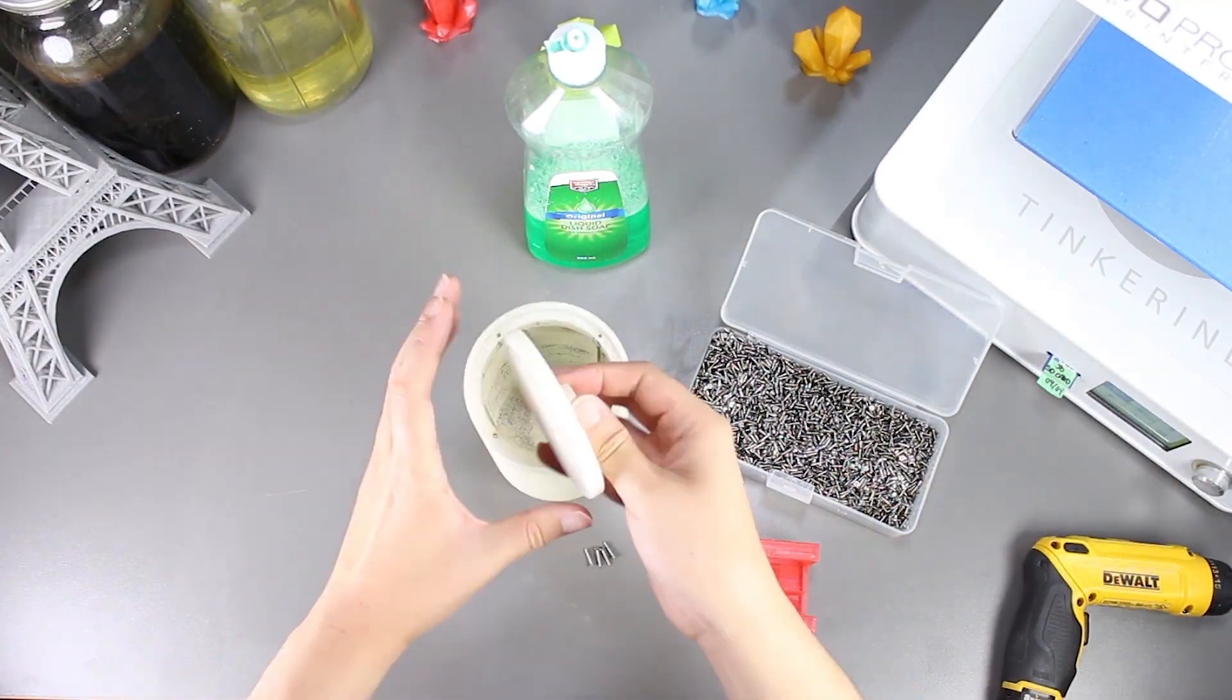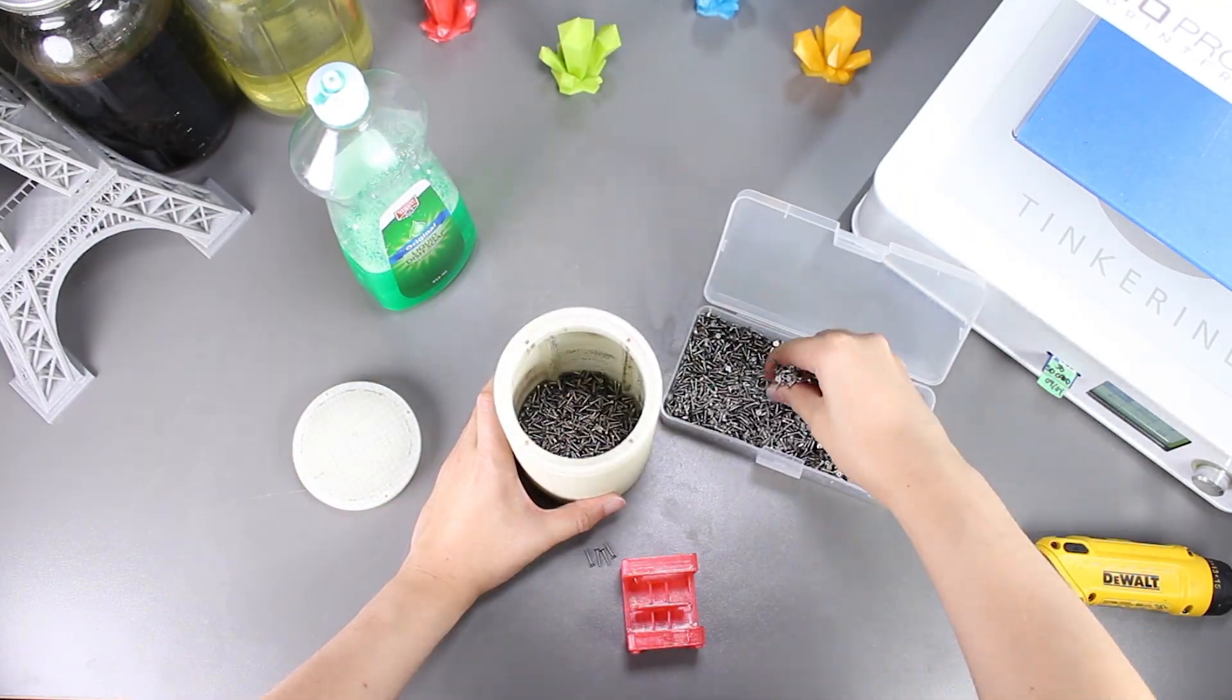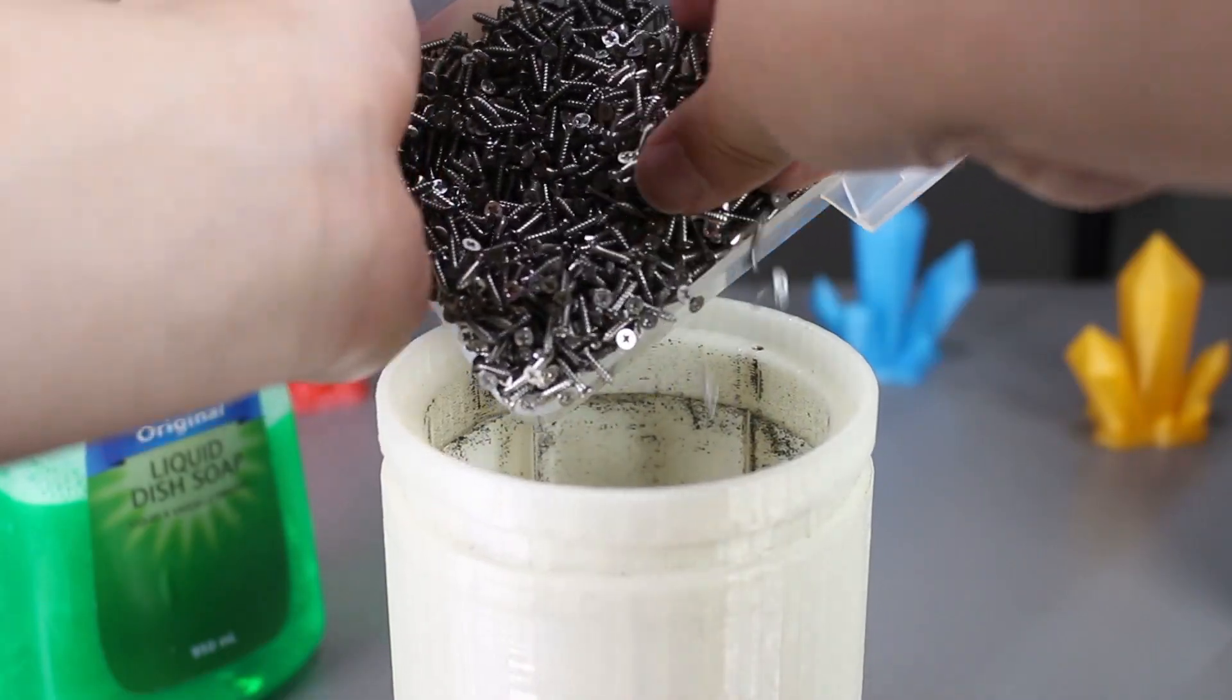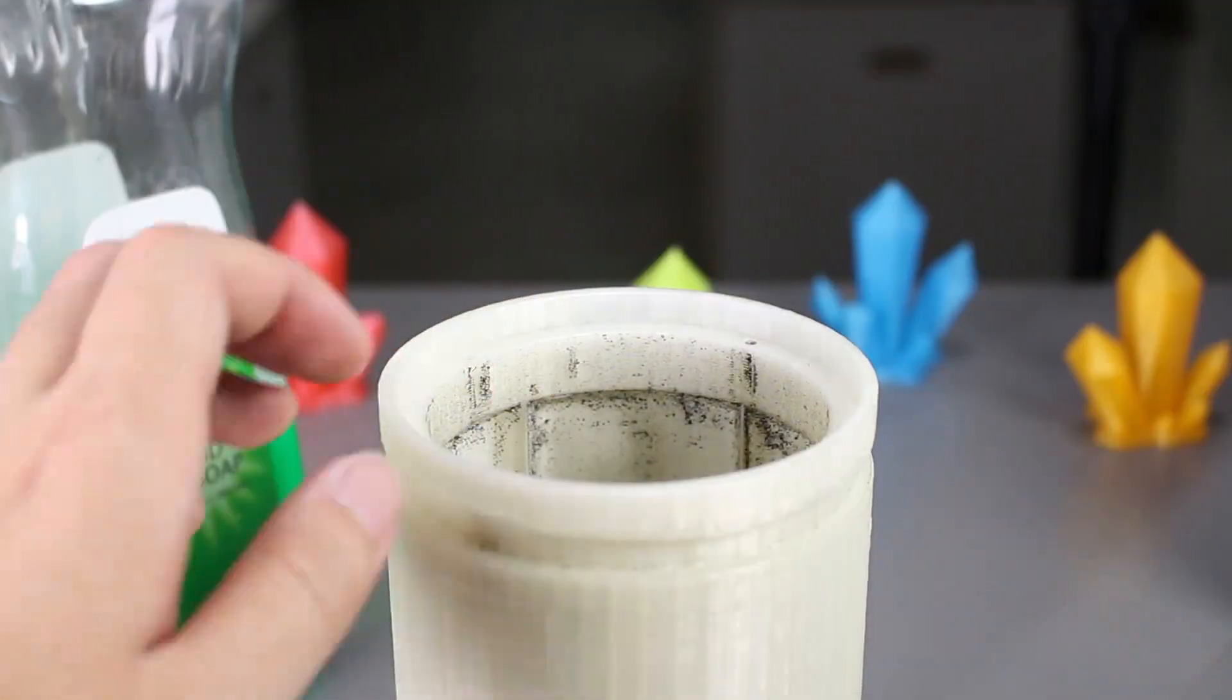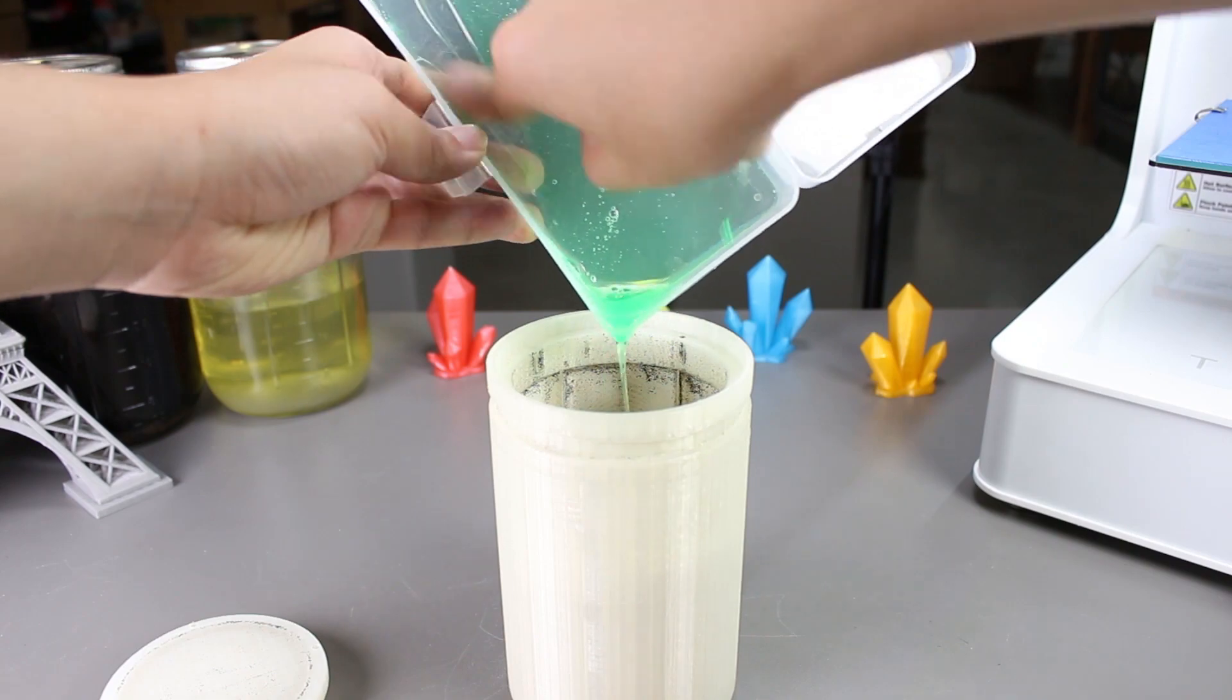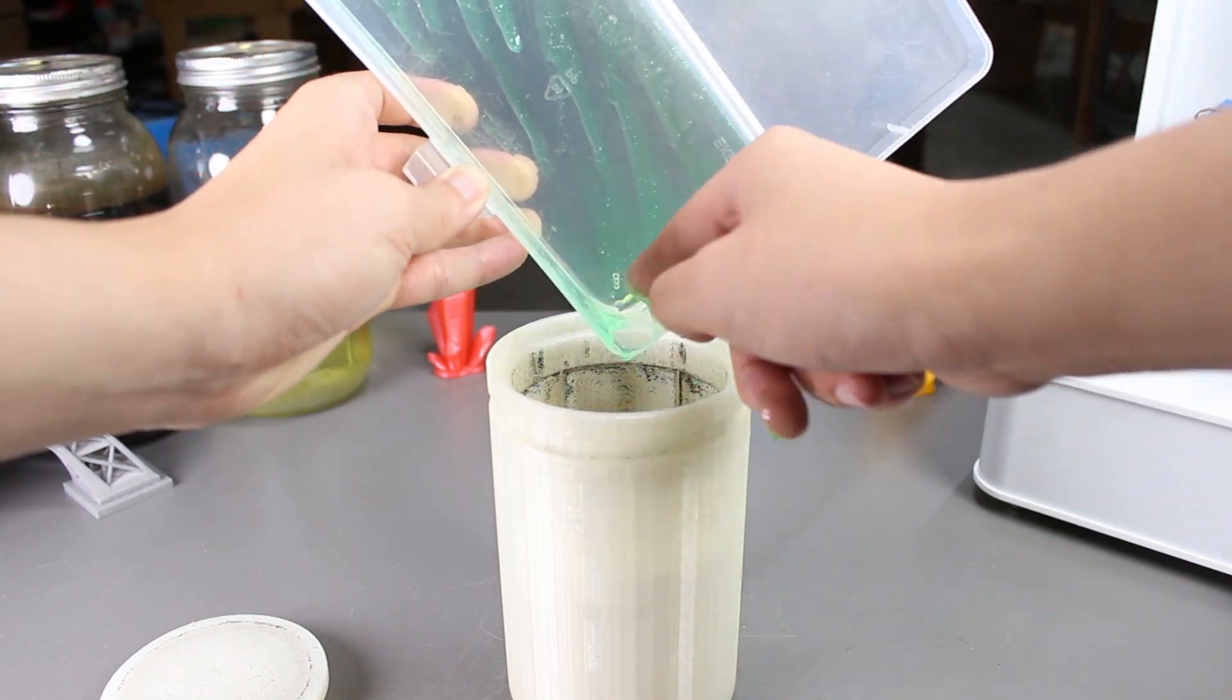We'll move the screws over into the tumbler. Now we can add our dish washing soap in. We have roughly around 20mm of dish soap in this box, which we are going to add to our tumbler.